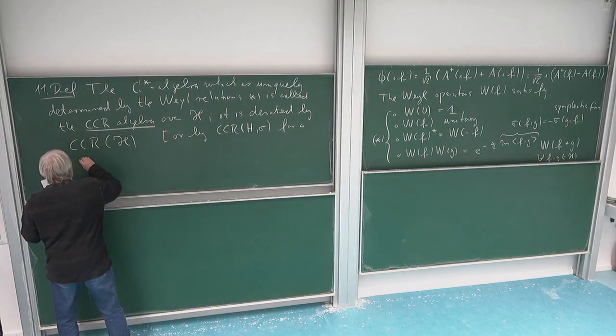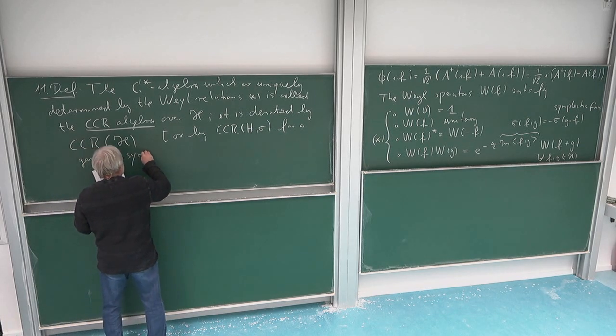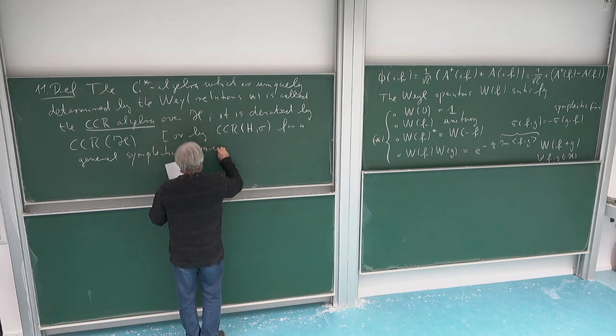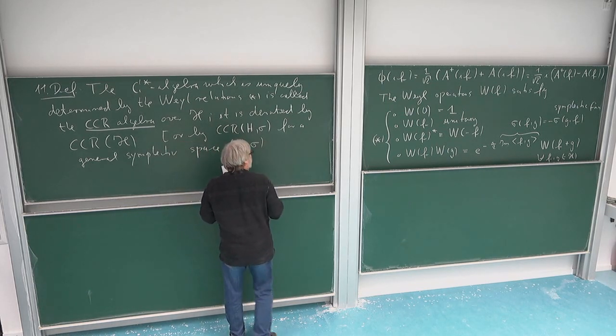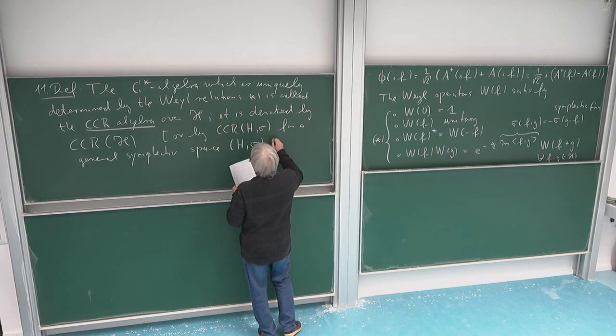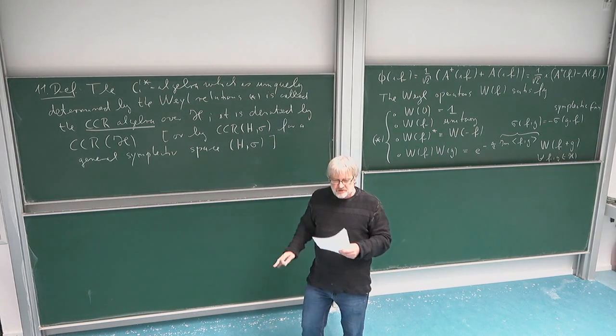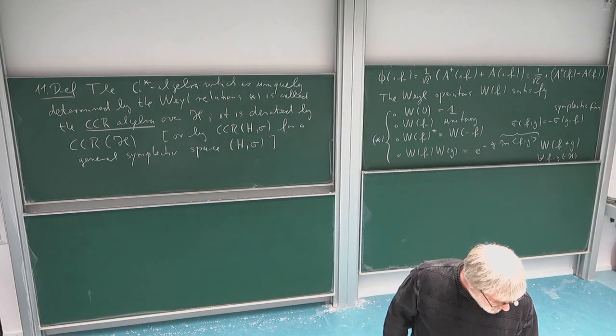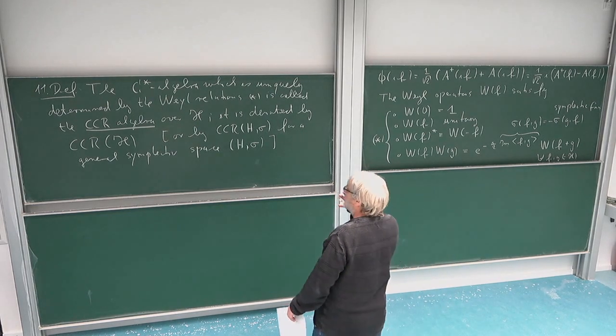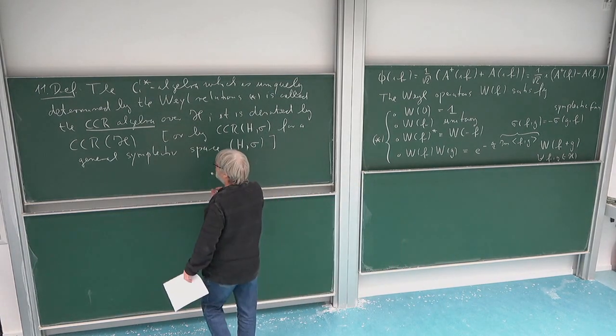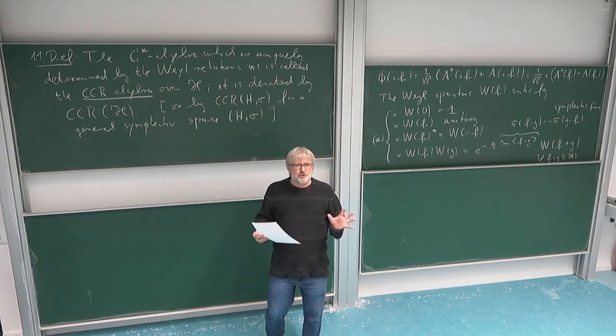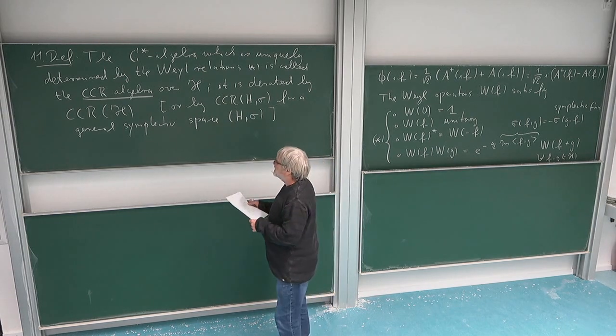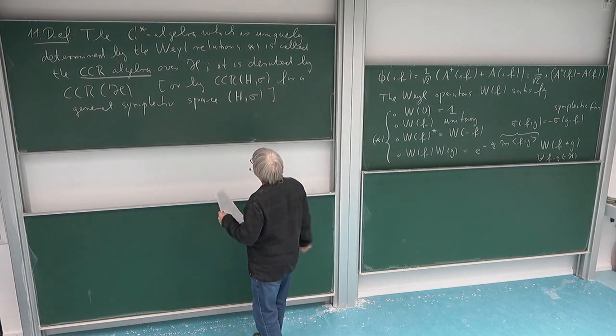So for a general symplectic space, a real Hilbert space and a form which is anti-symmetric. But this is not really relevant for us. Just that if you see it somewhere, it can be done in this generality without any big difference. So that's now the algebraic object, which somehow we want to separate from the concrete representation on the Hilbert space.